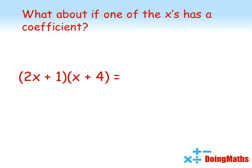What about if one of the X's has its own coefficient? For example if we want to do 2X plus 1 times by X plus 4 we're going to start off in exactly the same way. So 2X times by X gives us 2X squared. 2X times 4 gives us 8X. 1 times X is X and 1 times 4 is 4.